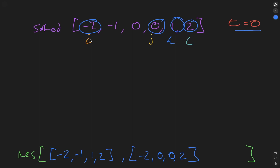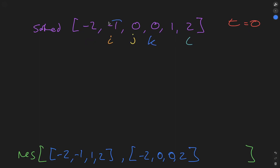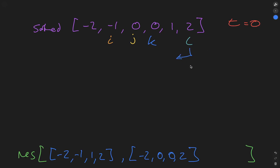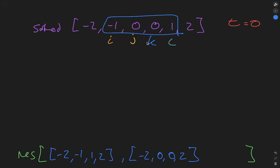So we increment i. i is set to the next value, j is i plus one, and k is j plus one. Adding up minus one, zero, zero, and two equals one, which is greater than the target. So we decrement l. We check the total of these four pointers and it equals the target of zero, so we add this into res.